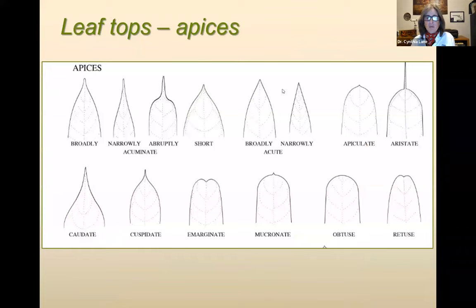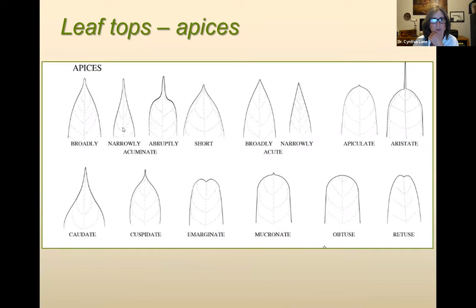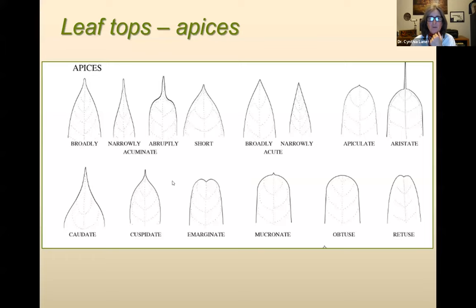Botanists get really specific about the tips of leaves because there are so many different kinds. The way they taper, whether there's an abrupt point, whether it's aristate — meaning it has a fine sharp point — or obtuse, meaning rounded. These different tip types can come into play in some keys. Similarly, the leaf base can be important in identifying plants.